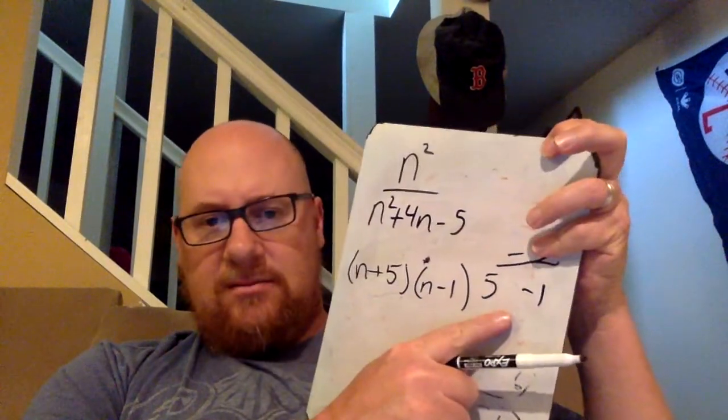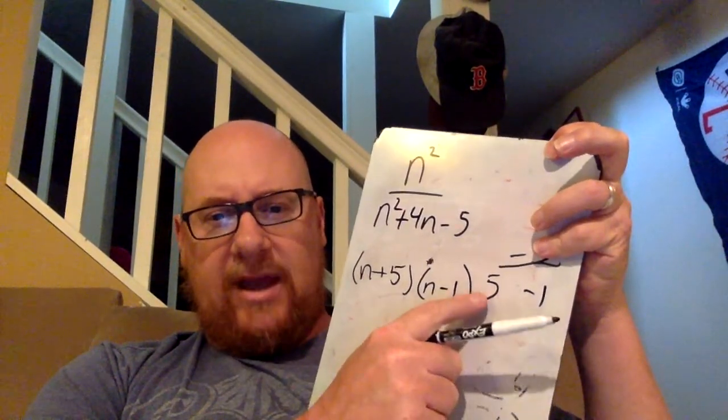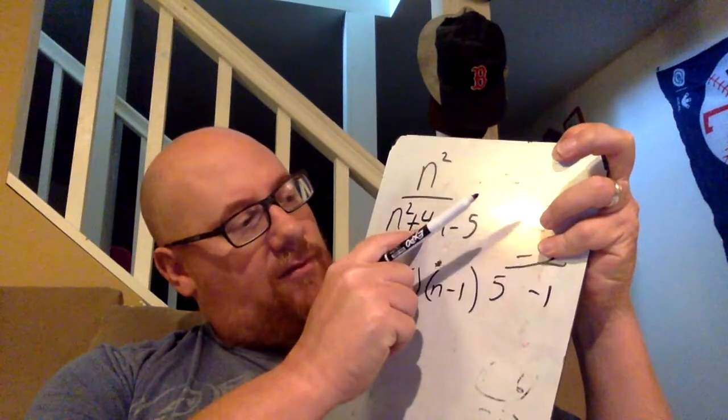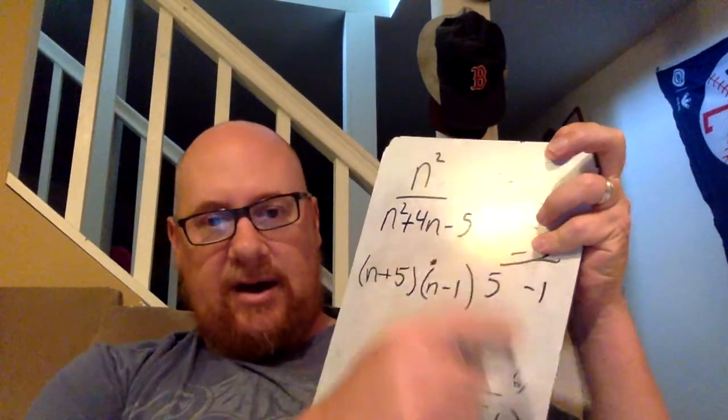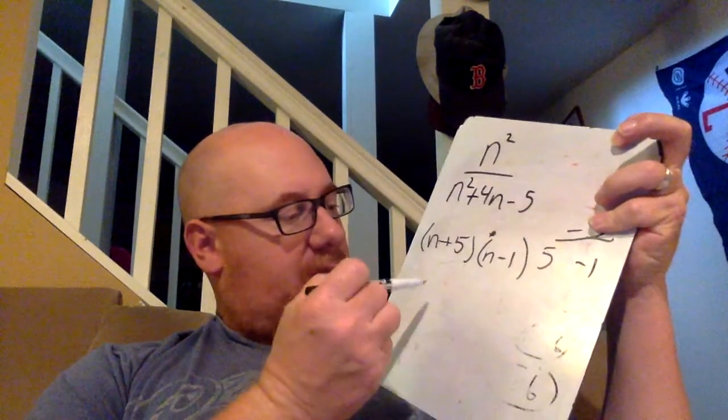Does everyone understand how I got this? Remember that when we add these two together, we get four. We multiply them together, we get negative five. Now it's simple. Set them equal to zero.